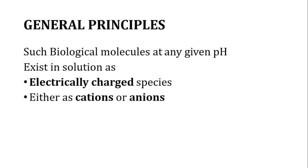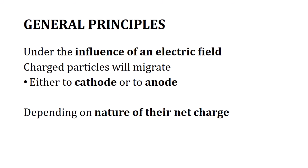So it means if we are doing the electrophoresis, this technique can be applied on these particles. Under the influence of electric field, the charged particles migrate either to cathode or to anode. Cathode is actually a negative electrode. Cations, which are positively charged ions, move towards the cathode, the negative electrode. Anions, which are negatively charged, move towards the anode, which is the positively charged electrode. So simply they move towards the opposite charge.